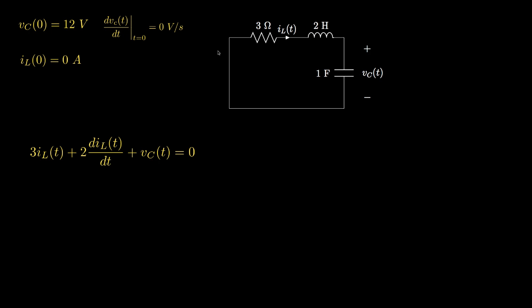Now that we've determined the initial conditions for the capacitor voltage, we can use Kirchhoff's voltage law to write a differential equation for this circuit. To do this we'll start with the resistor — the voltage across it is the resistance times the current through it.